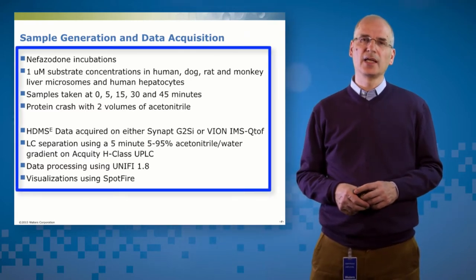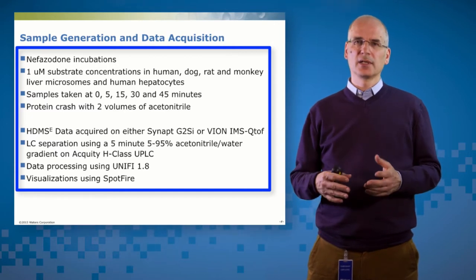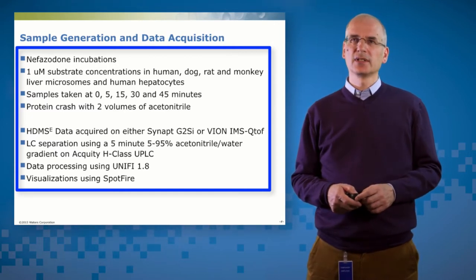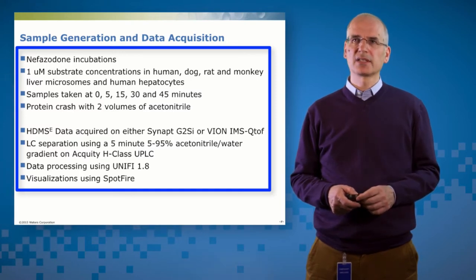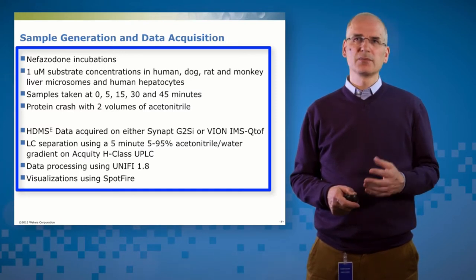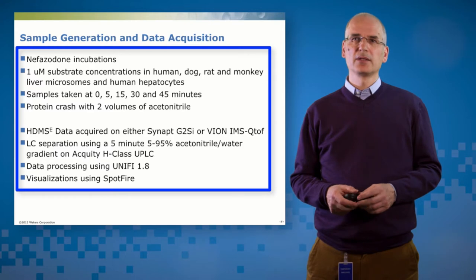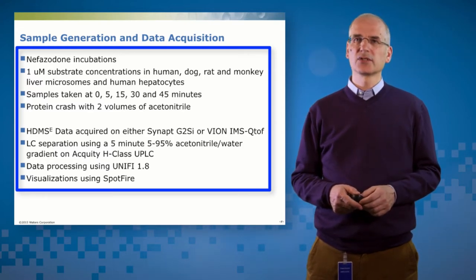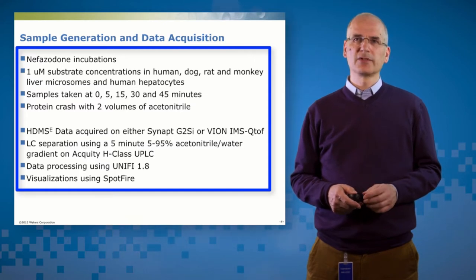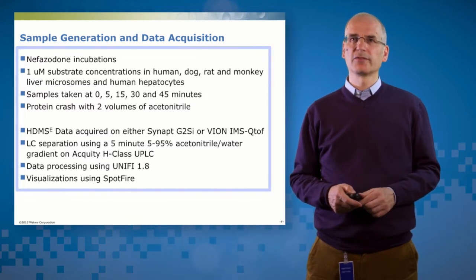So the samples that I'll be talking about today are all representative of the kinds of samples that you would generate inside a modern DMPK laboratory. So intrinsic clearance experiments. And I've used nefazodone as a representative compound in both hepatocytes and microsomes, a simple protein crash. And then we've acquired the data in HDMSE mode either on Synapt or on Vion using a standard ballistic gradient. And we process the data using the latest version of Unify software and some of the visualizations I did externally in Spotfire.